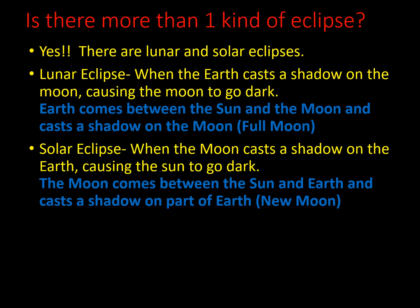Yes, there are lunar and solar eclipses. A lunar eclipse is when the earth casts a shadow on the moon, causing the moon to go dark — the earth comes between the sun and the moon. A solar eclipse is when the moon casts a shadow on the earth, causing the sun to go dark — the moon comes between the sun and the earth, and this occurs during a new moon.